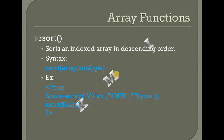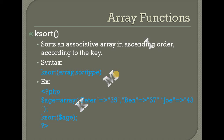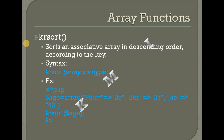Then rsort — sorting an indexed array in descending order. Arsort — associative array in ascending order according to value. Then ksort — sort an associative array in ascending order according to key. Key-based sorting according to value in ascending order.